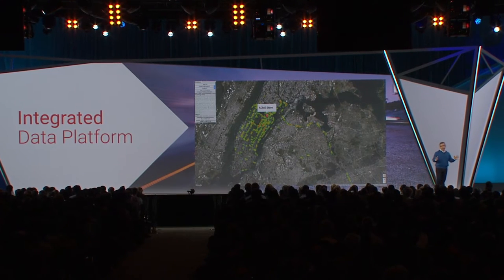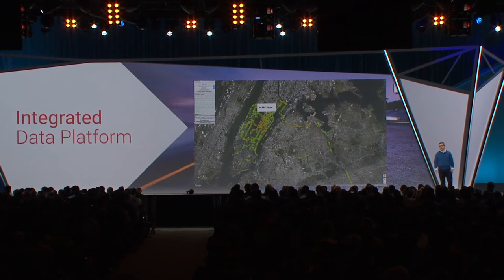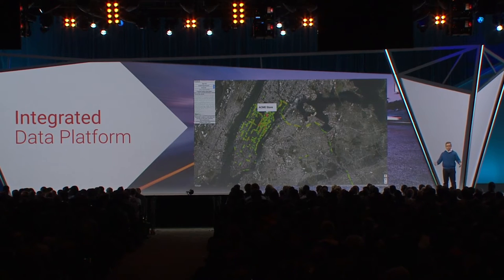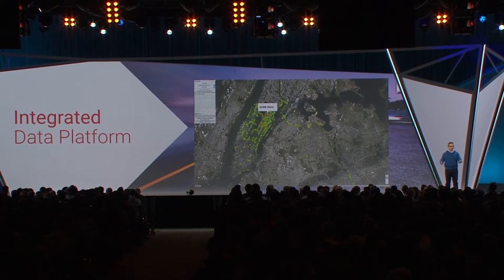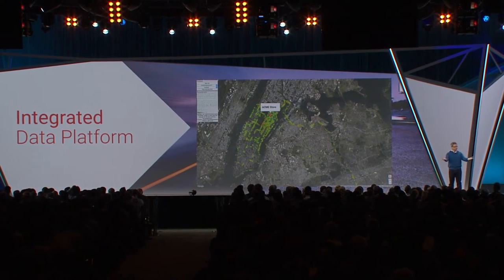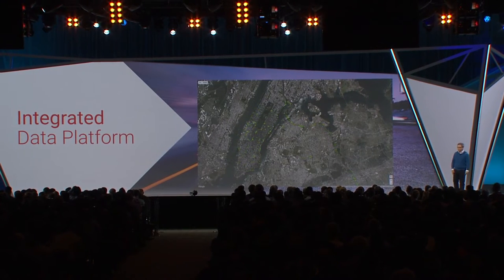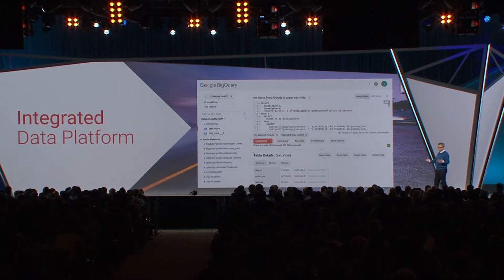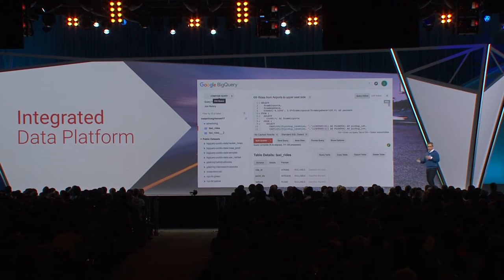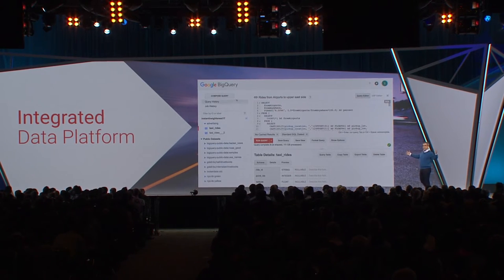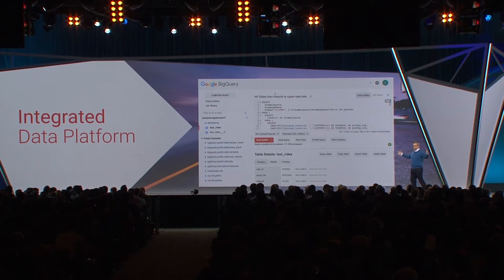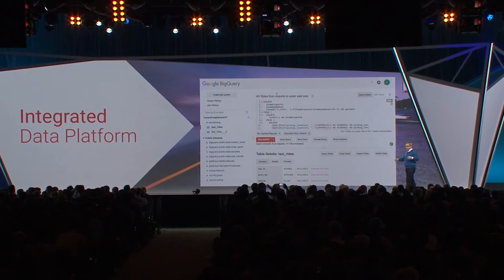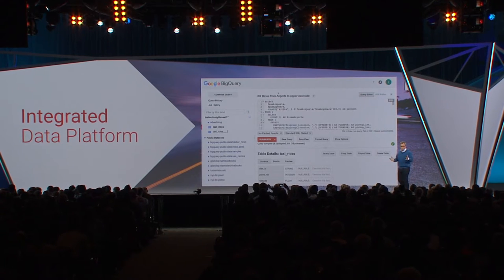But right now, we're just using a dumb rule for this — a very simple rule: where's the store, where's the taxi, place the ads. Can we do better? Can we automate this to start taking into account all the various data that we have?